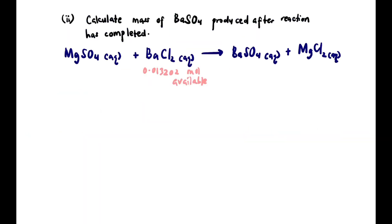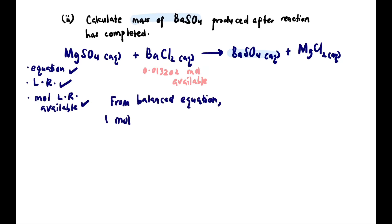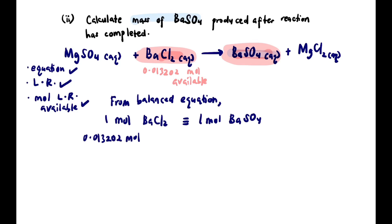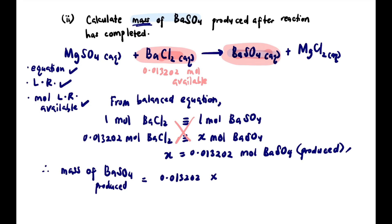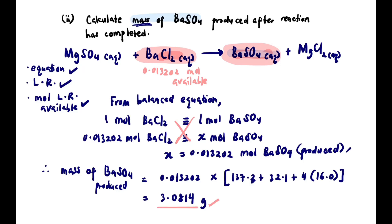For part two, calculate the mass of BaSO₄ produced. Using the moles of the limiting reactant BaCl₂ available (0.013202 moles), from the balanced equation 1 mole of BaCl₂ produces 1 mole of BaSO₄. So 0.013202 moles of BaCl₂ produces 0.013202 moles of BaSO₄. Mass of BaSO₄ produced = 0.013202 moles × molar mass of BaSO₄ = 3.0814 grams of BaSO₄ produced.